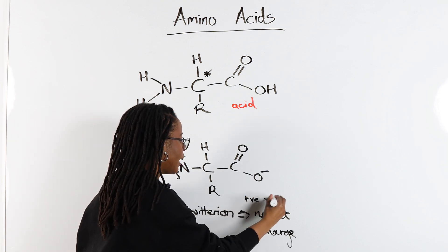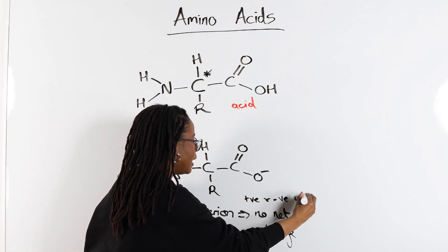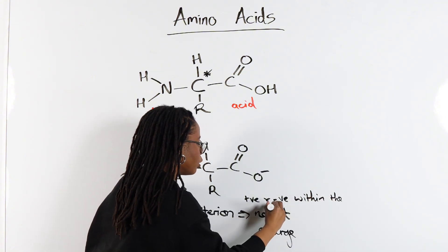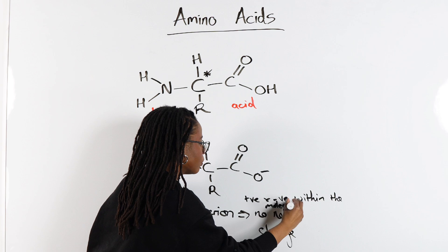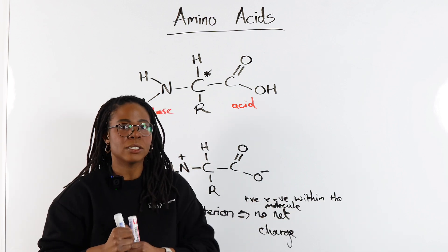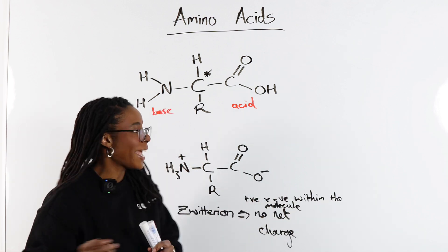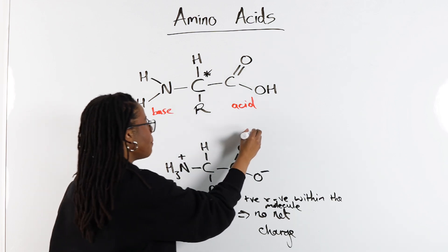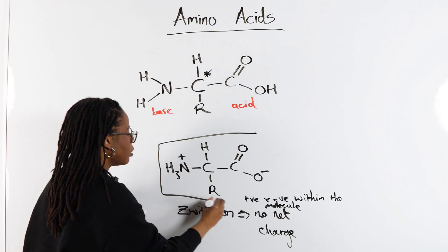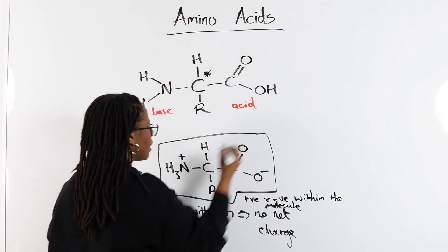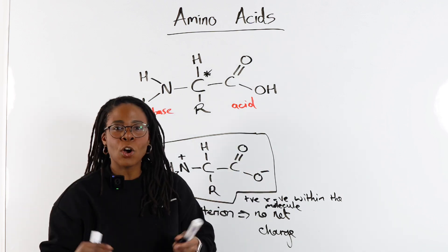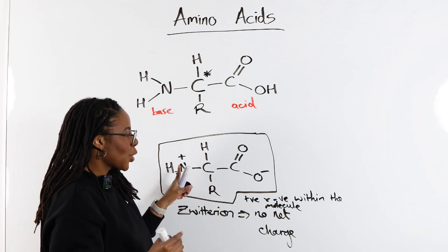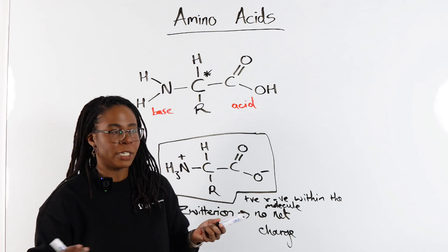So positive and negative within the molecule, but no net charge overall. So this is how our amino acid is typically going to exist, as our zwitterion. But depending on the pH that amino acid is in, that's going to affect our acidic and our basic groups differently.